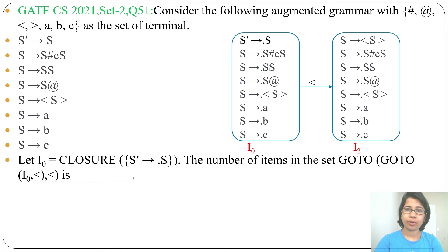By S it will go to I1. By less than symbol it will go to I2. Now I found this part GOTO(I0, less than). And it is saying again GOTO of this. Means again from this state I2, by less than symbol where it will go and how many items are there.